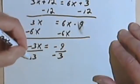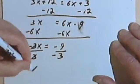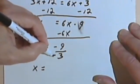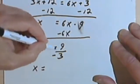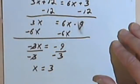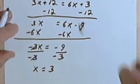So negative 3 divided by negative 3, these two will cancel and I'll just have an x. A negative divided by a negative is going to be a positive. So then I've just got 9 divided by 3, and that's 3. Let's check this and make sure the answer is right.